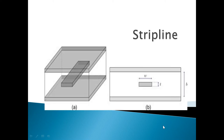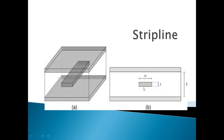A strip line is a three-conductor transmission line. In the cross-sectional view, one conductor is the central strip and the other two are the ground planes. The strip line consists of a central thin conducting strip of width w and thickness t, where w is greater than t. This strip is placed inside a low-loss dielectric substrate of thickness b/2 between two ground planes.